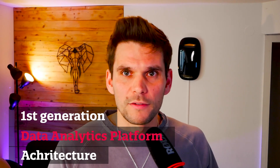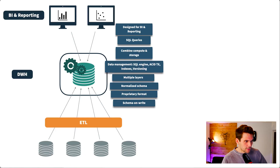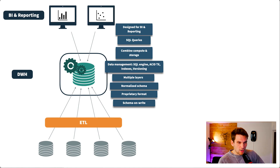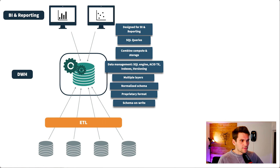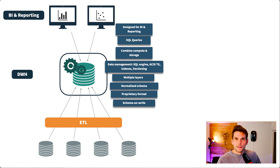Having that understood, we can look at the first generation data analytics platform architecture. At the center we have one central component: the data warehouse. The data warehouse is usually comprised of a relational database. Relational databases and data warehouses were designed for business intelligence and reporting use cases, where we need highly structured data that we can query with SQL to create reports. They use normalized schemas, layered schemas, and proprietary file formats.